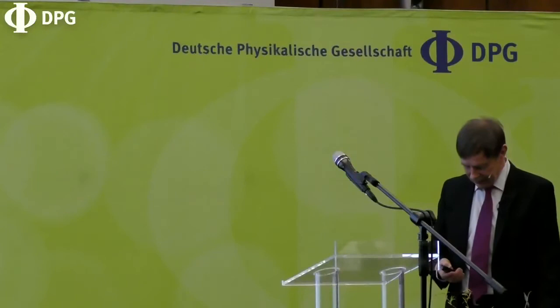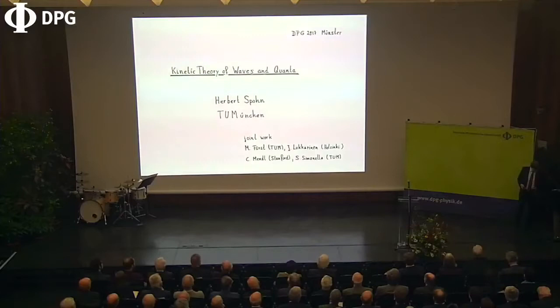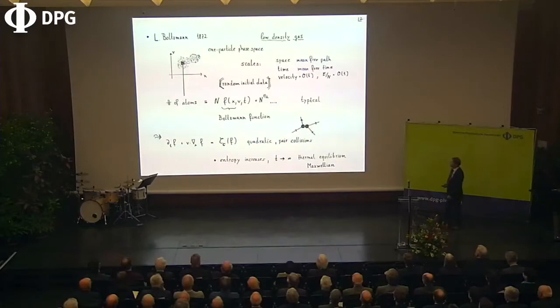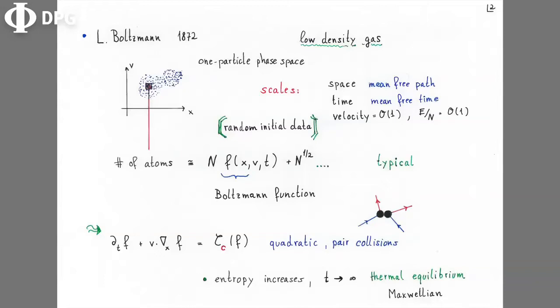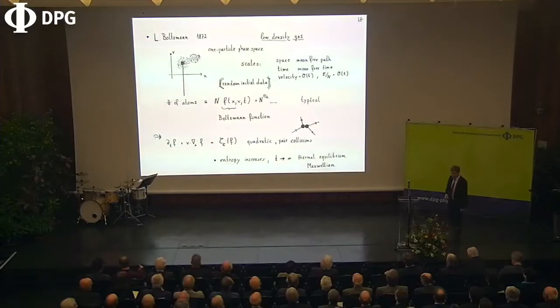Before telling you what I plan to do, let me remind you of what we learned 150 years or even longer ago. This is Ludwig Boltzmann, 1872. He was considering a low density gas — think of a gas like here in this room. He had this microscopic intuition that it would consist of many particles, like little hard balls reflecting from each other elastically.